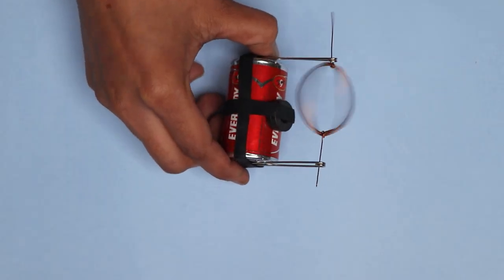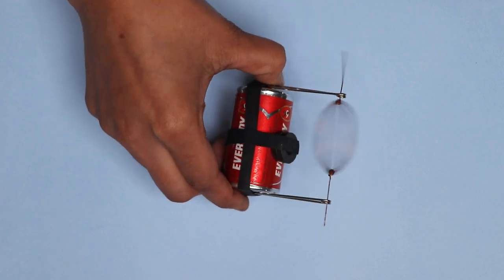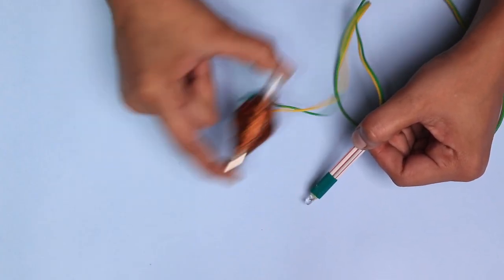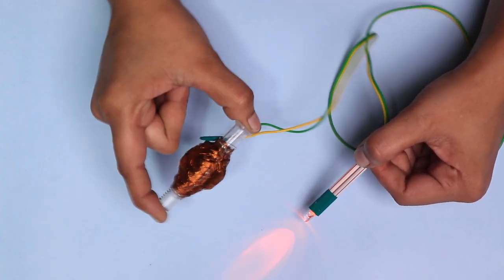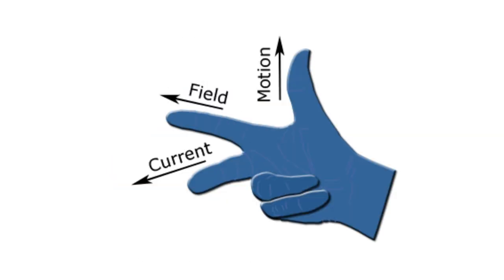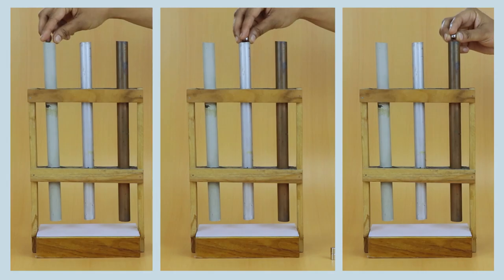Students normally learn these concepts in their 8th and 10th grade. We have tried to make this lesson more interactive and activity based. We will see how to make a DC motor, Faraday's electromagnetic induction, Fleming's left-hand and right-hand rule, and the effects of eddy current.